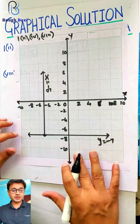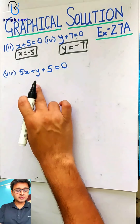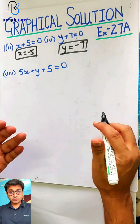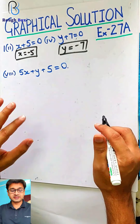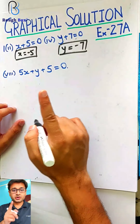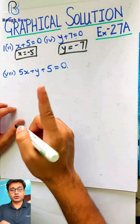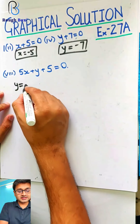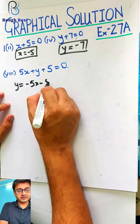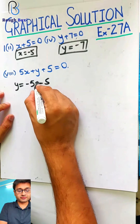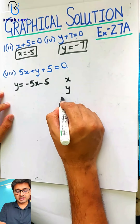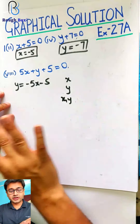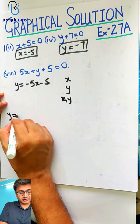So two graphs are already done. Let's try the third one now. For the third one, since there are two variables, we have to do some work. One variable is very simple. Come on, pause the video. First, make y as the subject. So minus 5x minus 5. The table: x, y, x comma y. Same thing we are doing — nothing new. Write it three times.